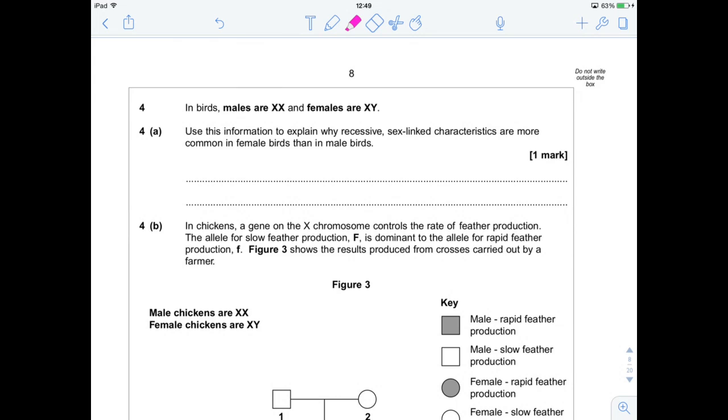It's quite a cruel question in a way because it uses birds whose sex chromosomes are exactly the opposite of ours. So males have two X chromosomes whereas females have an X and a Y. The examiner has done this purely to try and catch out students who aren't paying attention, who lapse into human sex chromosomes instead. So stay focused and we'll get through this together.